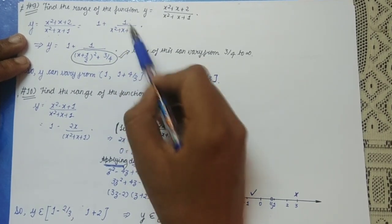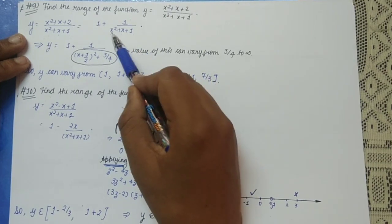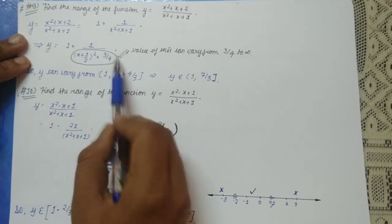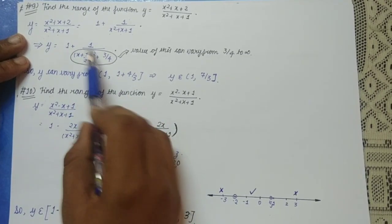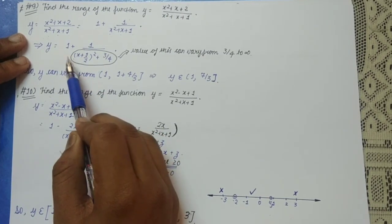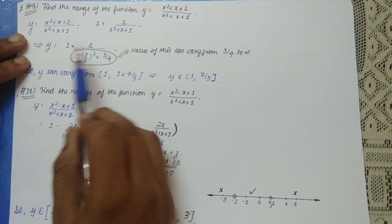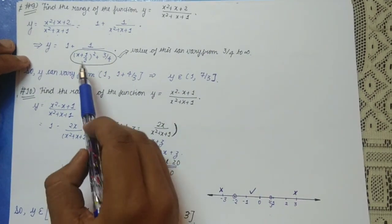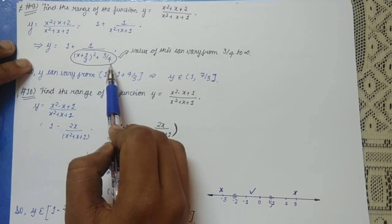We need to focus our attention on 1/(x² + x + 1). We wrote x² + x + 1 as (x + 1/2)² + 3/4. The term (x + 1/2)² can take values from 0 to infinity — it equals 0 when x = −1/2 and approaches infinity when x → ±∞. So the denominator x² + x + 1 varies from 3/4 to infinity.